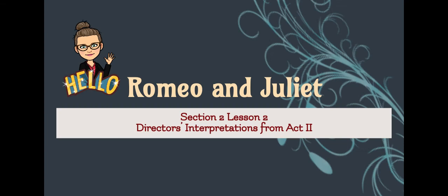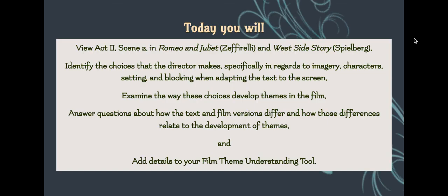Hello and welcome to Romeo and Juliet section 2 lesson 2: director's interpretations from act 2. Today you will view act 2 scene 2 in Romeo and Juliet — the Franco Zeffirelli version — and West Side Story directed by Steven Spielberg. You will identify the choices that the director makes, specifically in regards to imagery, character, setting, and blocking when adapting the text to the screen.